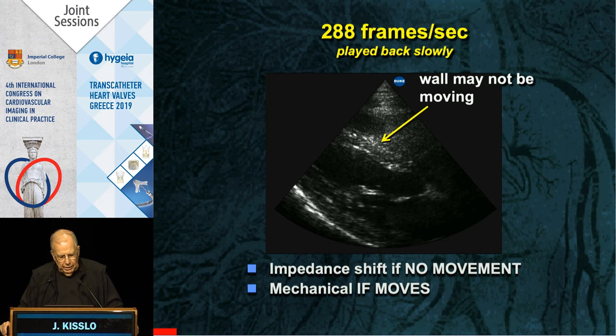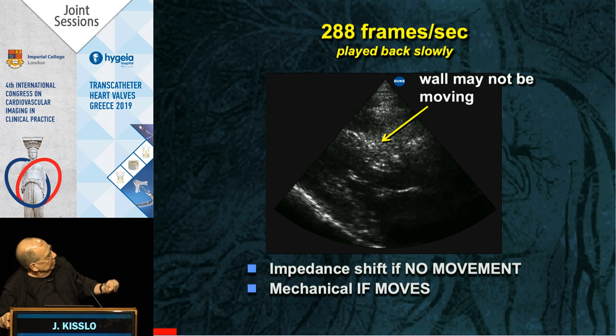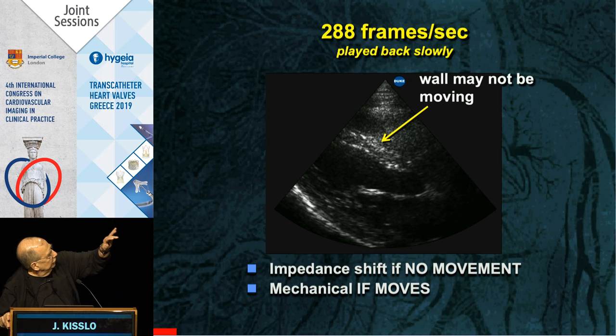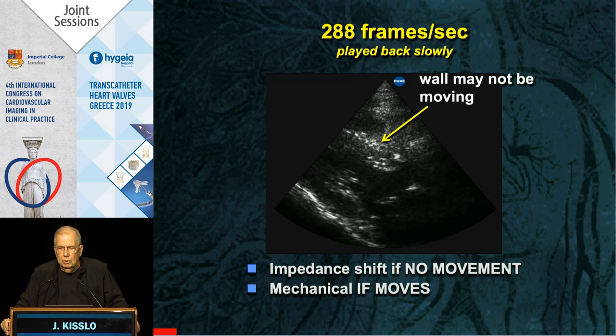If you look at this picture imaged at roughly 200 to 300 frames per second, watch the septum. The wall may not be moving, but you'll see things moving within the wall — inside the wall. We're not sure what that is: one possibility is the conducting system, the other possibility might be flow.